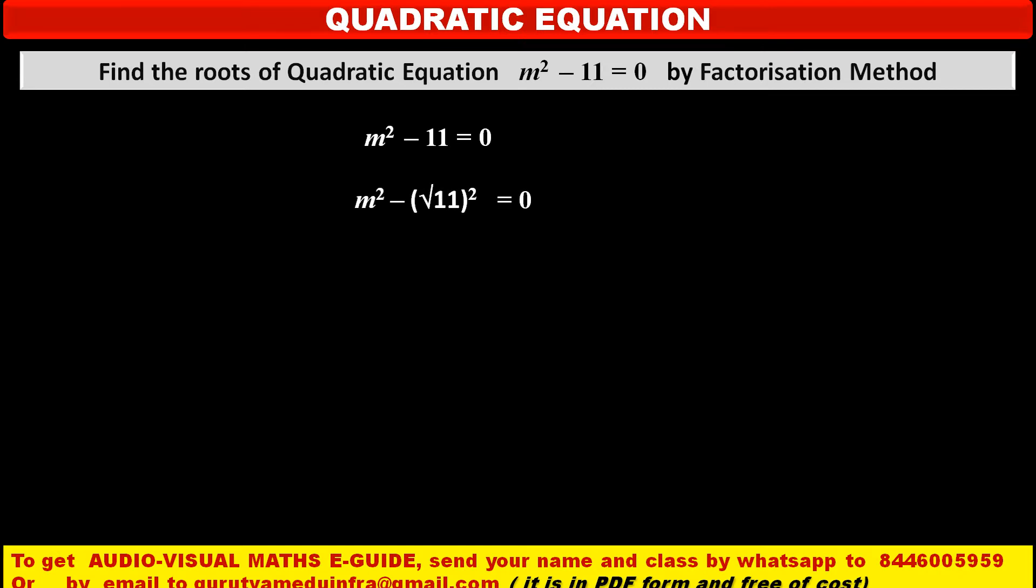So we can write this equation as m² - (√11)² = 0. Now see, friends, here we can apply one formula, one identity.